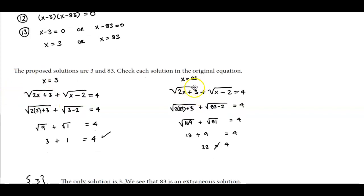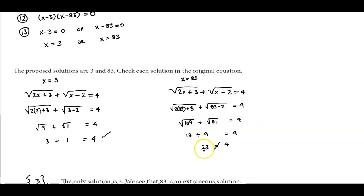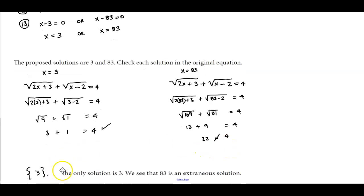Plugging in x equals 83, we get 2 times 83 plus 3 equals 169, and 83 minus 2 equals 81. The square root of 169 is 13, and the square root of 81 is 9. Since 13 plus 9 equals 22, which does not equal 4, x equals 83 is an extraneous solution. Therefore the only solution is x equals 3.